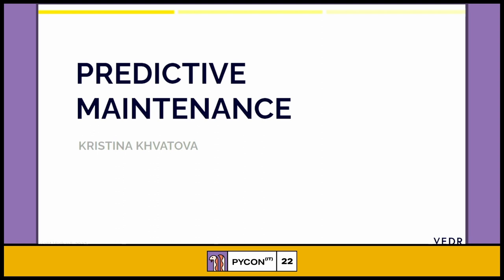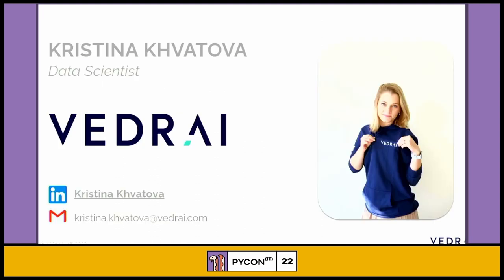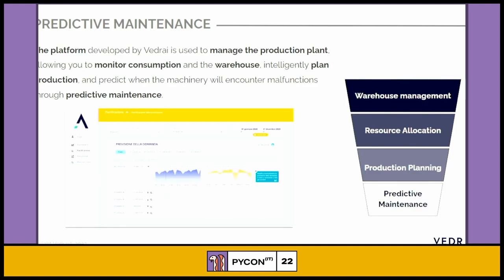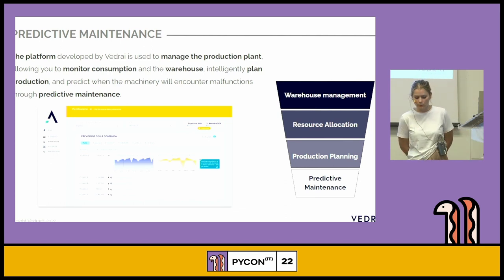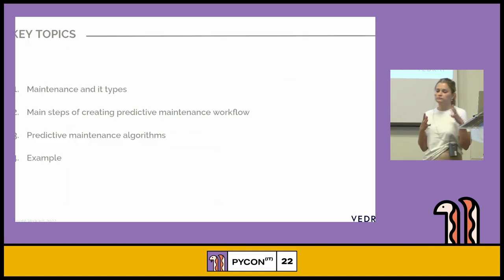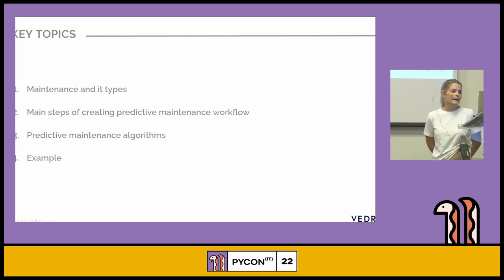I'd like to introduce myself. I'm a data scientist at a startup named Vedry. We propose different solutions for our clients in the field of artificial intelligence, and one of our products is an application which helps clients to manage their production — monitoring consumption, warehouse, allocating resources, and doing predictive maintenance. We achieved some results in this field and I'd like to share what we did.